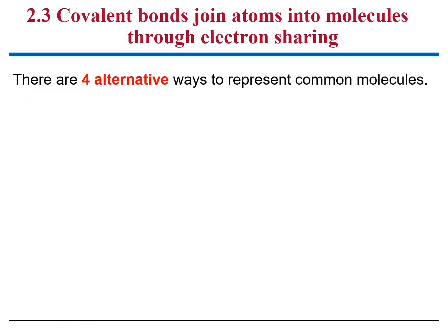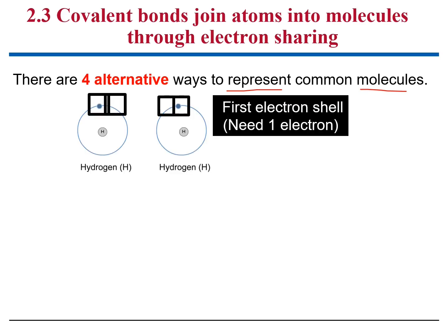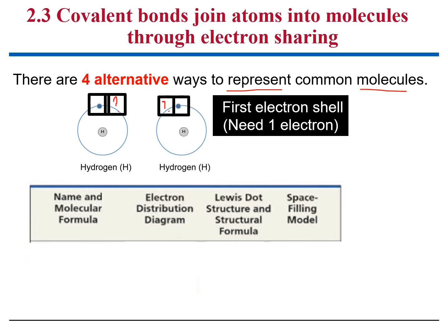Now we're going to talk about how to represent these molecules graphically — and not only graphically, how to represent them in general. There are four alternatives: you have a name and a molecular formula, you have an electron distribution diagram that is very detailed, you also have the Lewis dot structure and the structural formula, and finally you have the space-filling model. So you have these four ways to represent common molecules. For example, this is the hydrogen and this would be the molecular formula.